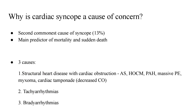Amongst patients who have structural heart disease, those who have cardiac obstruction leading to decreased cardiac output are most responsible for these cases. For example, lesions such as severe aortic stenosis, hypertrophic obstructive cardiomyopathy — obstructive or in some cases non-obstructive cardiomyopathy — pulmonary hypertension, massive pulmonary embolism, cardiac myxoma, and cardiac tamponade.